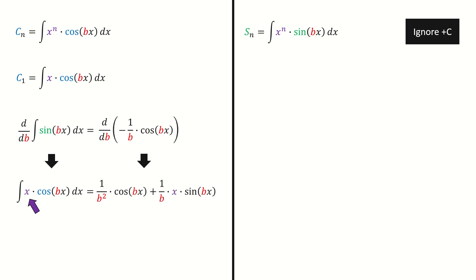After taking the derivative, the right-hand side goes here. Again, this purple-colored x is coming from chain rule. So we are done for c1.